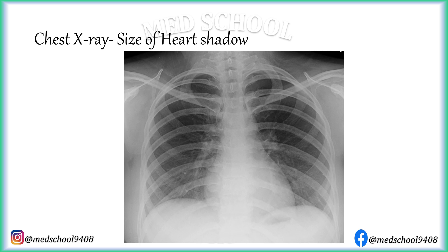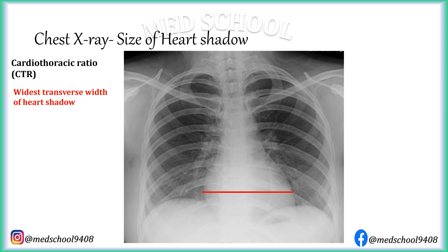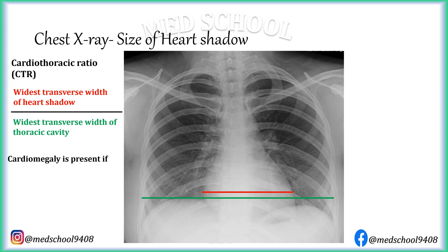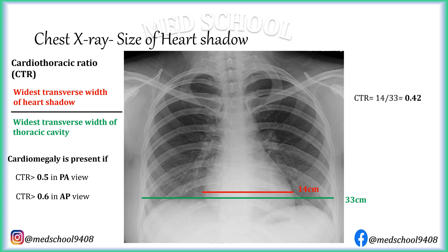The size of the heart shadow can be enlarged in cardiomegaly. To confirm the presence of cardiomegaly, the cardiothoracic ratio is used. The cardiothoracic ratio, or CTR, is calculated as the widest transverse width of the heart shadow divided by the widest transverse width of the thoracic cavity. Cardiomegaly is said to be present if CTR is more than 0.5 on PA view and more than 0.6 on AP view. For example, if the widest transverse width of the heart shadow is 14 cm and the widest transverse width of the thoracic cavity is 33 cm, the CTR would be 0.42 — so cardiomegaly is not present in that X-ray.